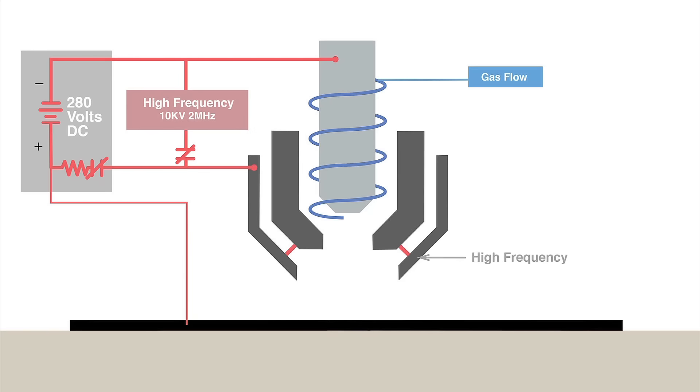Next, the high frequency spark ionizes the gas and makes it electrically conductive. This creates a current path between the electrode and the nozzle and forms a pilot arc of plasma.